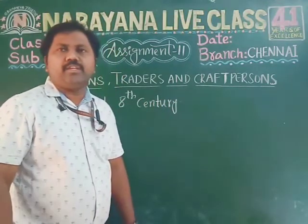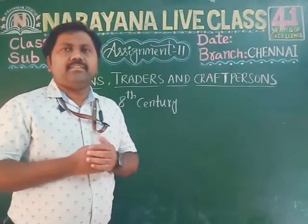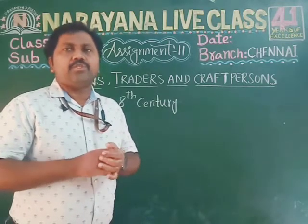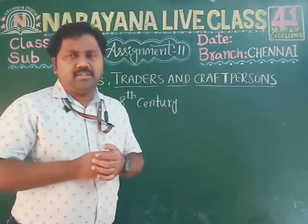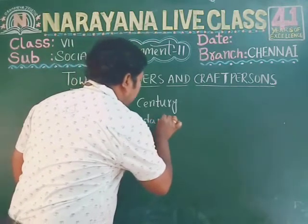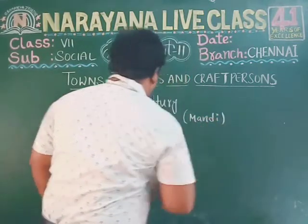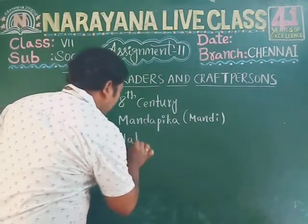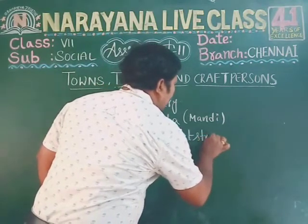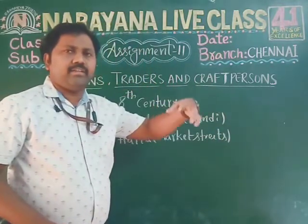Now the second question: what kind of market did the small towns have? The answer is Mandapika, which later came to be known as Mandi. Also market streets, which we call Hatta. Hatta means a market street — like how all shops are arranged in one street, such as in T. Nagar.